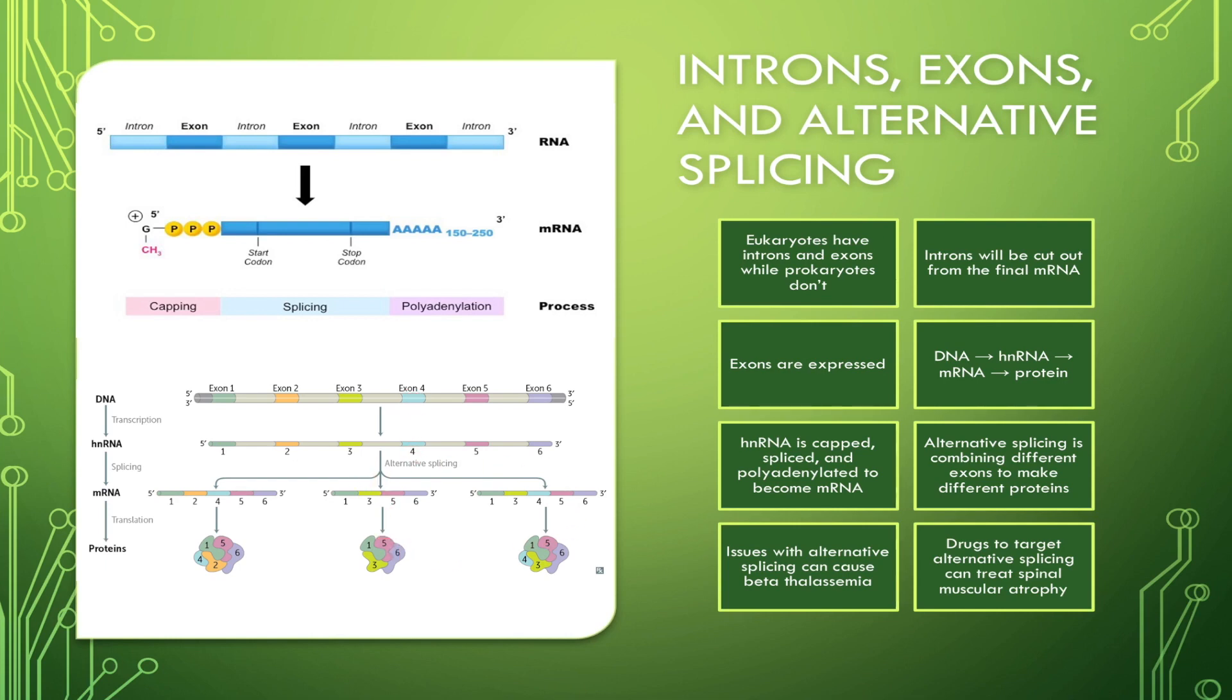So essentially, there is a drug that can allow, for example, let's say this product is missing and you're making this product. So this drug can cause the cells to splice out 4 and make this one, so you're not missing this one anymore.